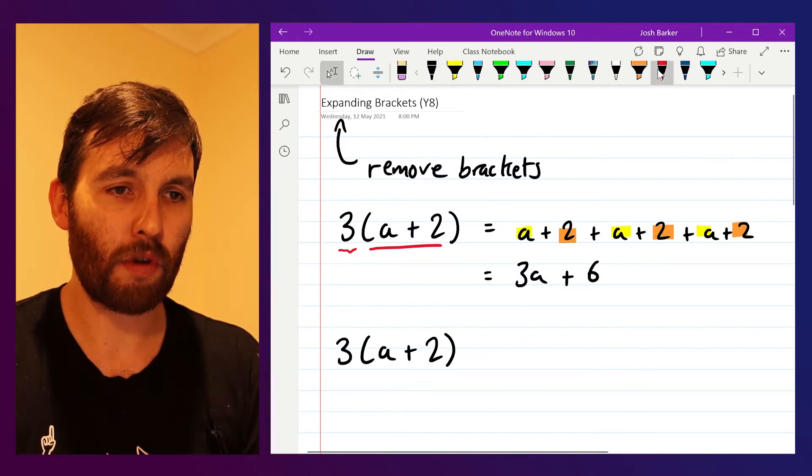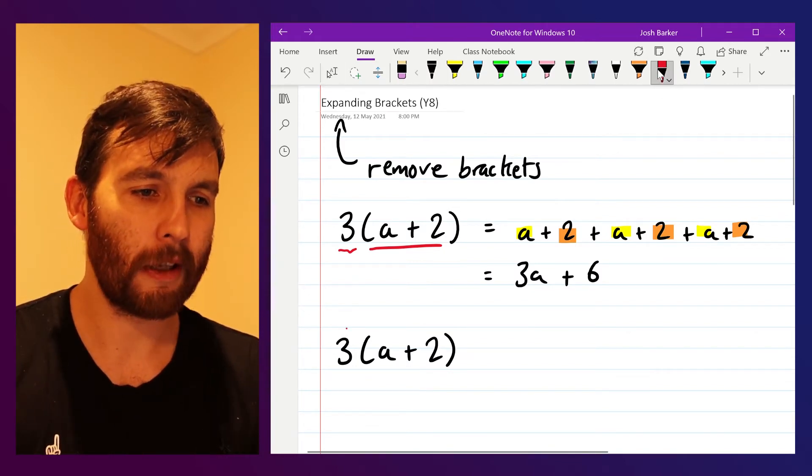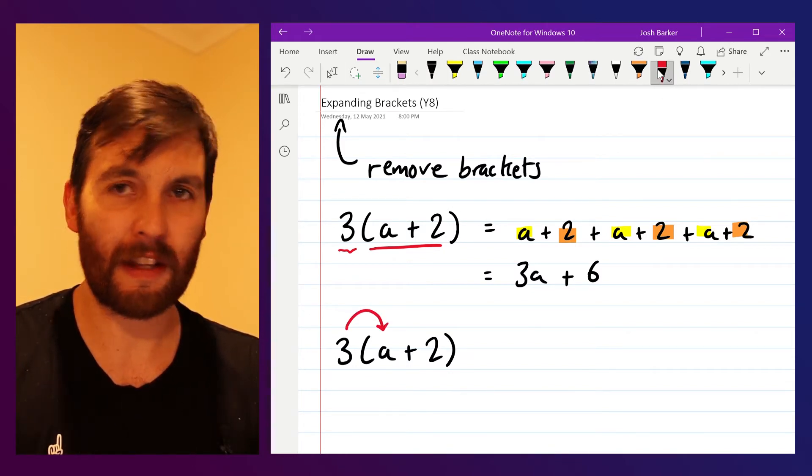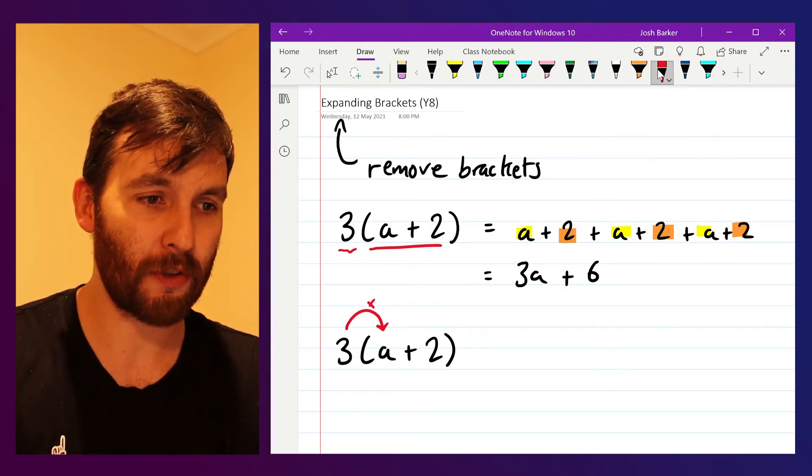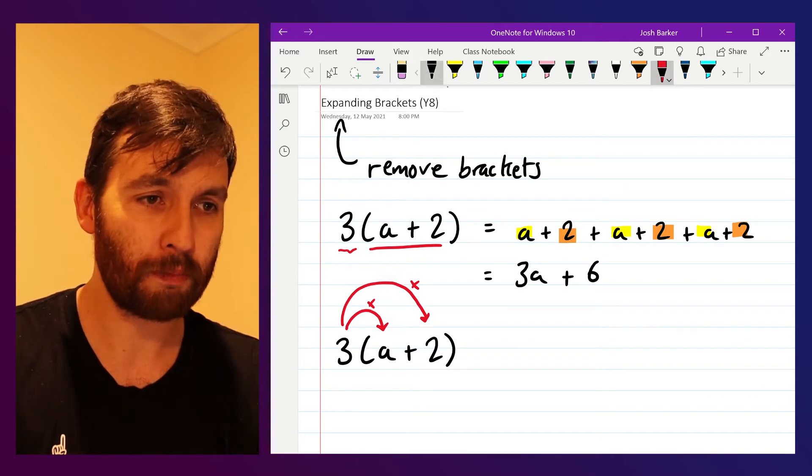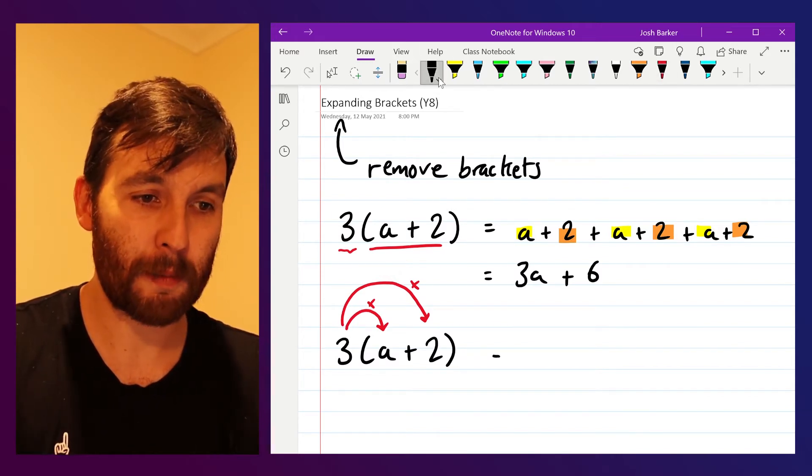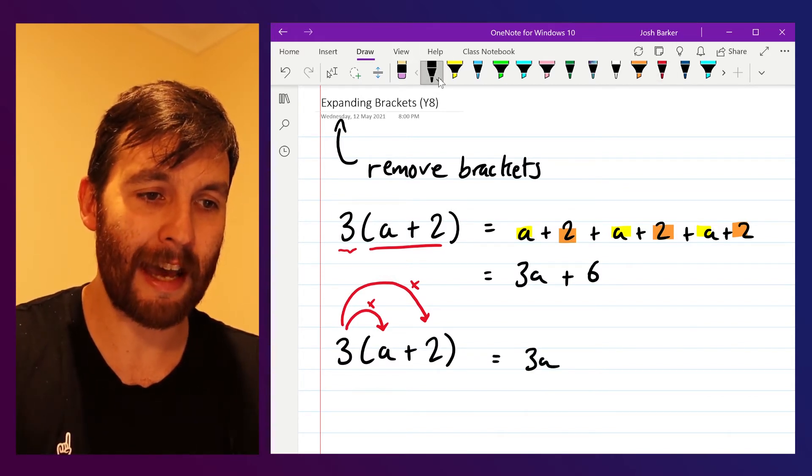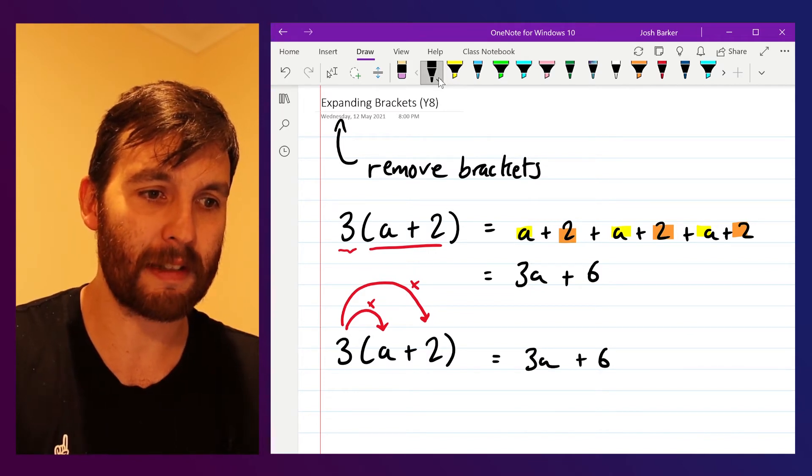What I'll do instead is write it this way. I'll go, well, I know I've got three of everything that's in this bracket essentially. So I've got 3 multiplied by a, I've got 3 multiplied by 2 as well, which is going to give me 3 multiplied by a gives me 3a, 3 multiplied by 2 gives me 6.